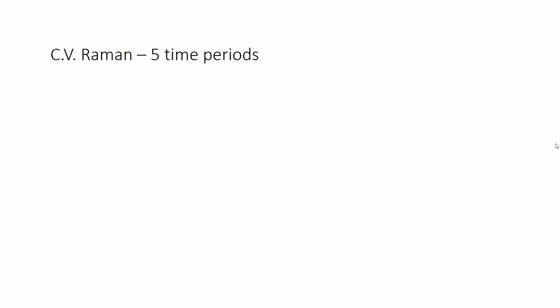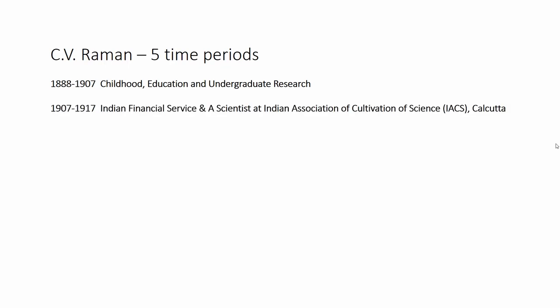For this talk, we can look at C.V. Raman's life in five time periods. The first is childhood, education, and undergraduate research, dating from 1888 to 1907. The second period is when C.V. Raman becomes an administrator in the Indian financial service and also a part-time scientist at the Indian Association for Cultivation of Science, IACS, which was then in Calcutta. The third period is when Raman becomes a Palit professor, a very reputed position at Kolkata University, and also continues research at IACS — this period runs from 1917 to 1933.